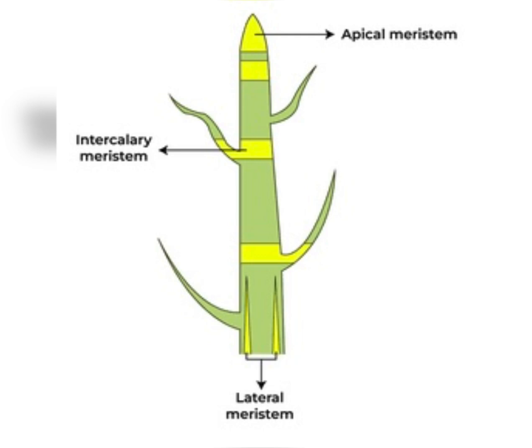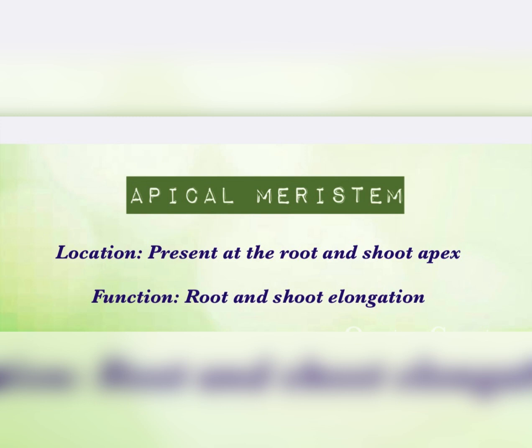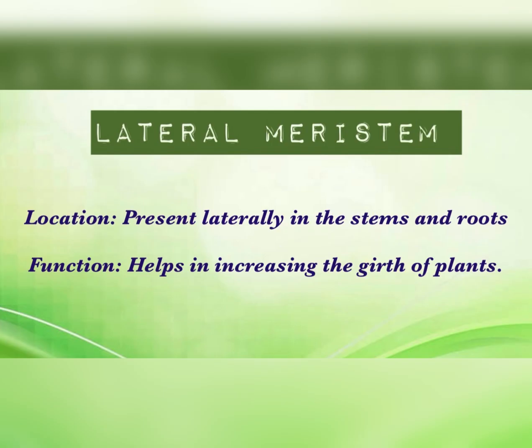In the diagram, apical meristem is found in the apical region, intercalary is found in the nodal and inter-nodal region, and lateral meristem is found in the sides of the plant. Apical meristem is present at the root and shoot apex and its function is root and shoot elongation.